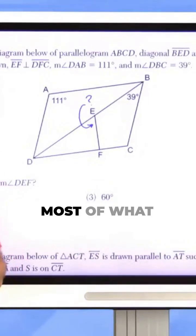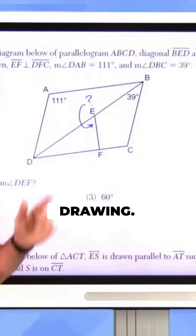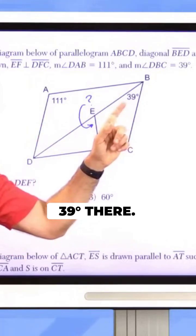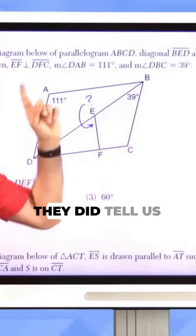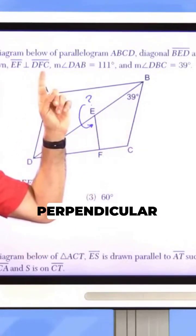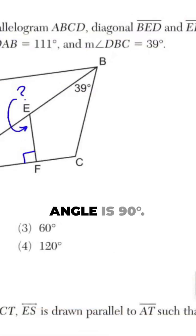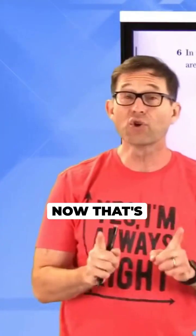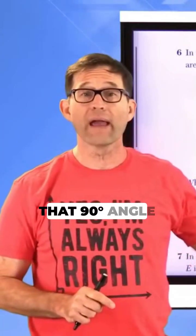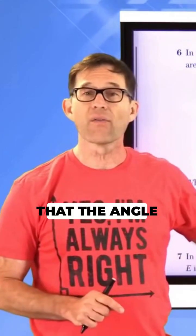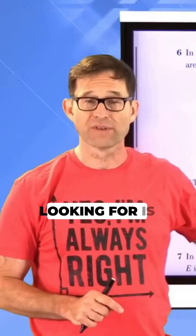Now what do we know? Well, most of what they've told us they've already marked in the drawing — for instance, 111 degrees there, 39 degrees there. They did tell us that EF is perpendicular to DFC, and that tells me that this angle is 90 degrees. That's good because that 90-degree angle is contained in the same triangle that the angle I'm looking for is contained in.